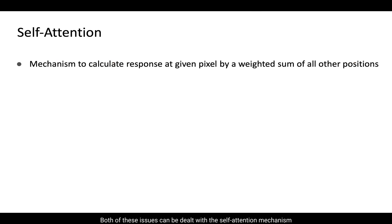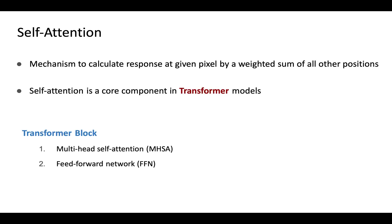Both of these issues can be dealt with using the self-attention mechanism, which calculates a response at a given pixel by a weighted sum of all other positions. Self-attention is a core component in transformer models, but with a unique multi-head implementation.